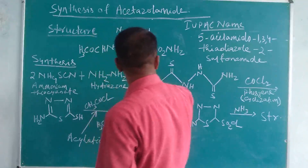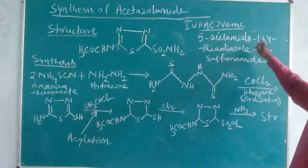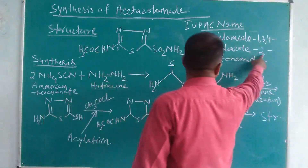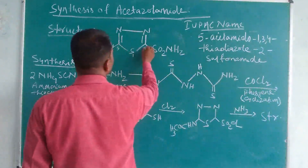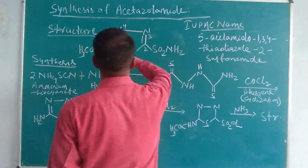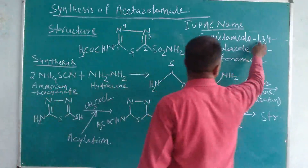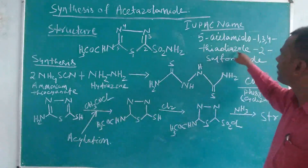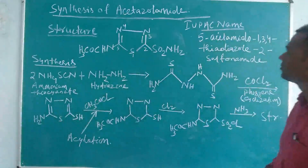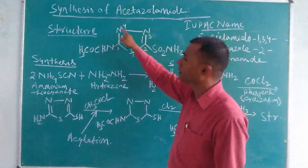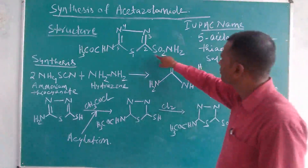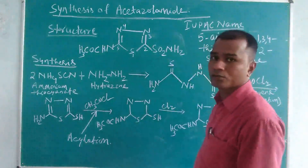This is the 5th position — 5-acetamido. The ring is 1,3,4-thiadiazole, numbered 1 through 5. The thia group refers to the sulfur atom in the ring, and the diazol portion contains the two nitrogen atoms (N, N). At position 2 is the sulfonamide group. So the full name is: 5-acetamido-1,3,4-thiadiazole-2-sulfonamide.